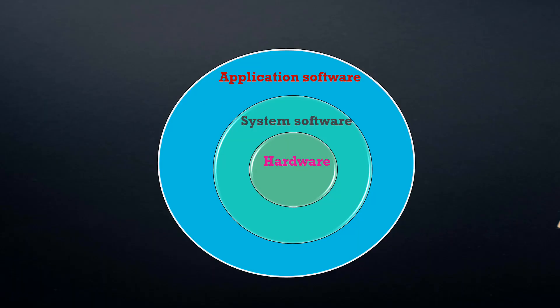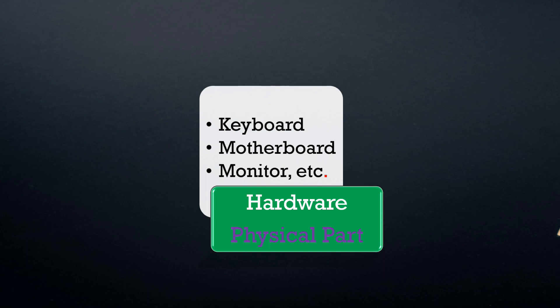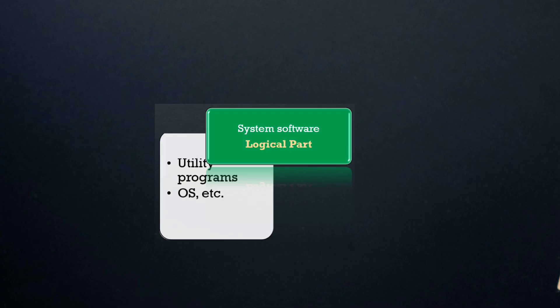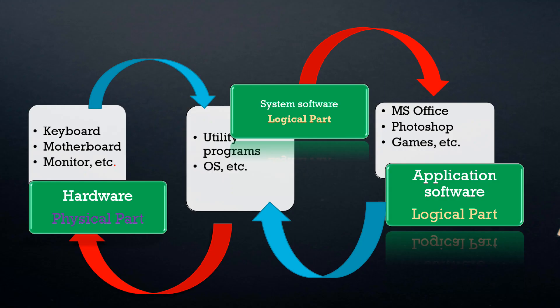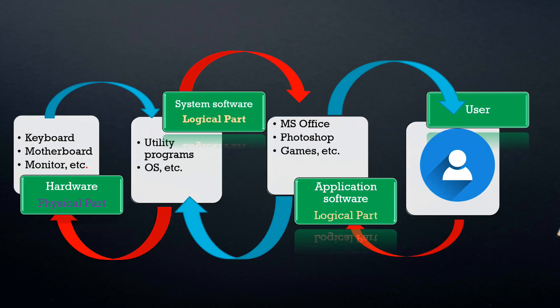Now we can see what we learned today. Hardware is a physical component of a computer. System software is required to run hardware and application software. Application software cannot directly interact with hardware, but it requires an intermediate system software. The user can give and take input and output through application software. That is, the user interacts with application software, then application software interacts with system software, then system software interacts with the hardware, and vice versa.